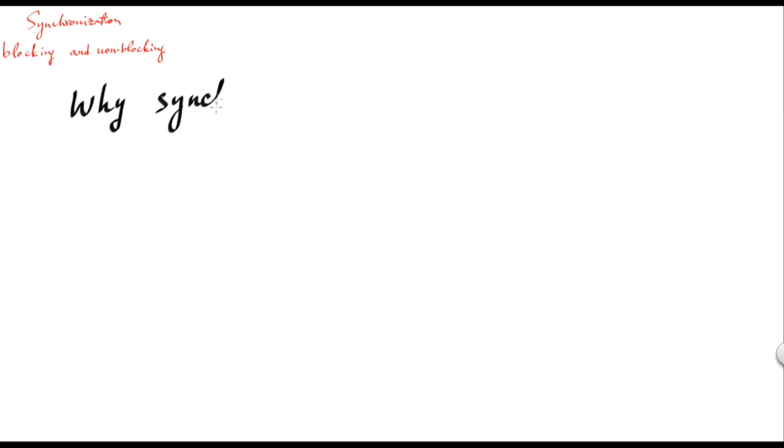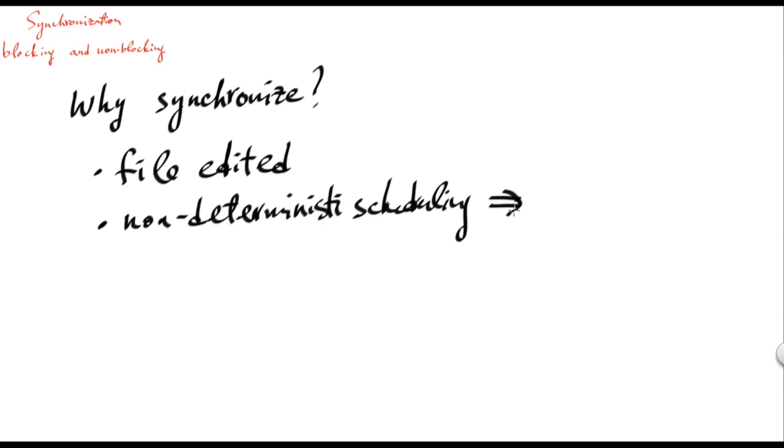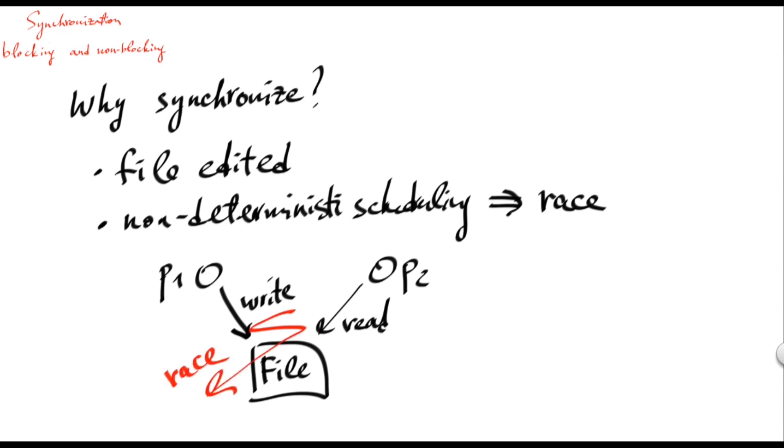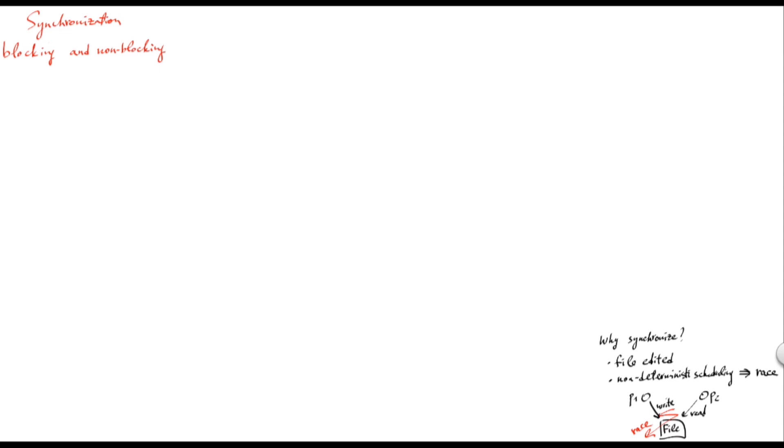So why do we need to synchronize? One of the main reasons is to resolve conflicts when multiple threads of computation, which we call processes, access shared data concurrently. For example, we have a file edited concurrently by multiple users. And the outcome of the concurrent file editing may be non-deterministic, and depend on the schedule of these concurrent accesses. And when the outcome, the result of the computation, in particular the content of the file, depends on this non-deterministic scheduling, we call it the race condition. So synchronization is a problem of resolving races.